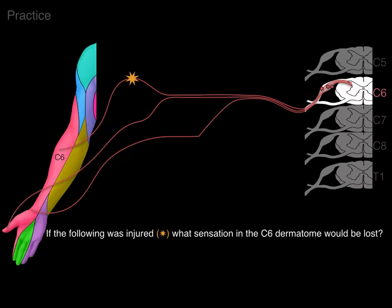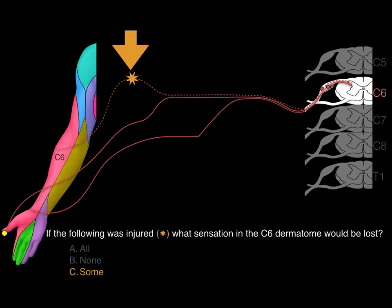Let's do a little practice. If the following nerve was injured, what sensation in the C6 dermatome would be lost — all, none, or some? Pause if you want to think through this. Some of the C6 dermatome would be lost, because some neurons are okay and some are okay. So only part of the C6 dermatome would be lost.